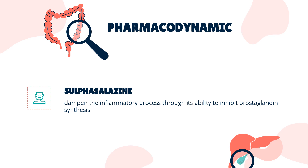Pharmacodynamics: Mesalazine is one of the two components of sulfasalazine, the other being sulfapyridine. It is the latter responsible for most of the side effects associated with sulfasalazine therapy, while mesalazine is known to be the active moiety in the treatment of ulcerative colitis. Mesalazine is thought to dampen the inflammatory process through its ability to inhibit prostaglandin synthesis, interfere with leukotriene synthesis and consequent leukocyte migration, as well as act as a potent scavenger of free radicals. Mesalazine appears to be active mainly topically rather than systemically.